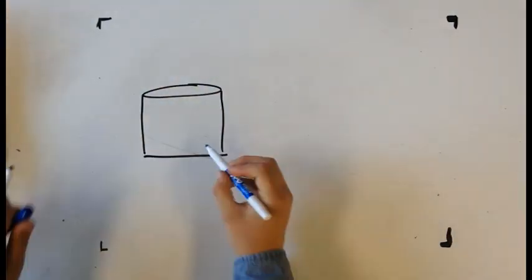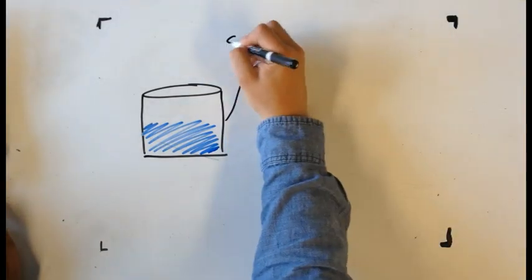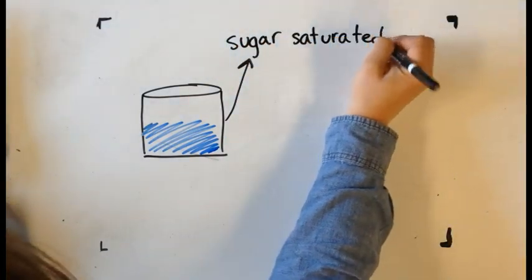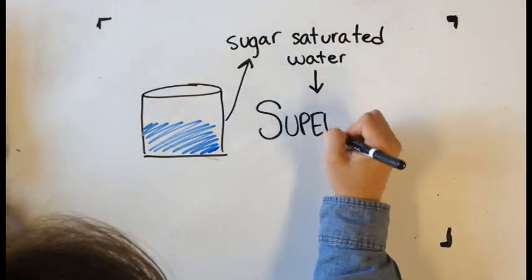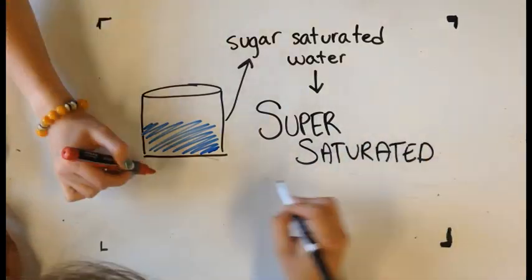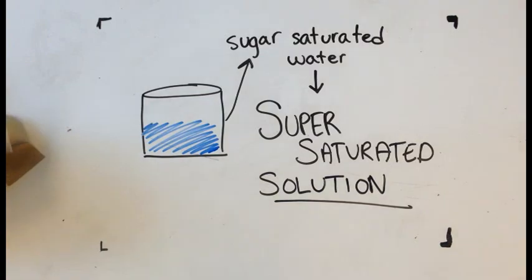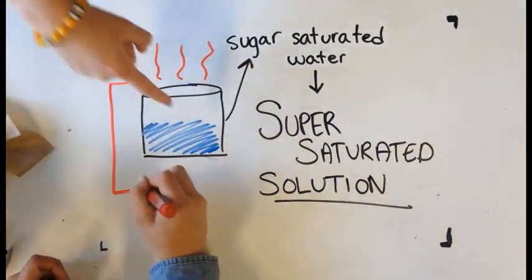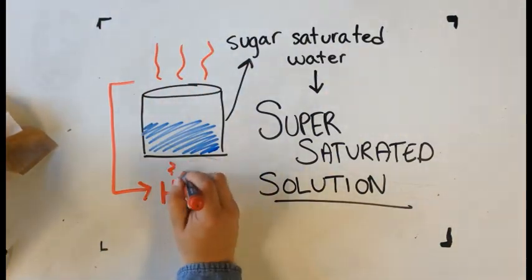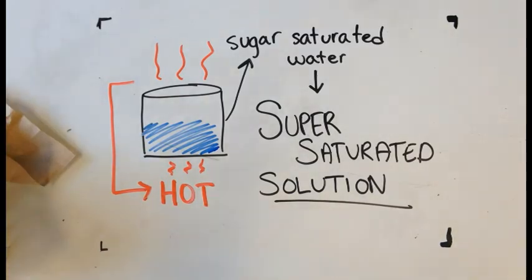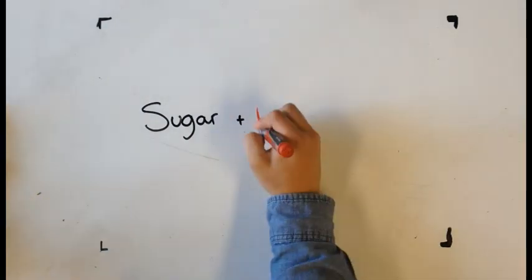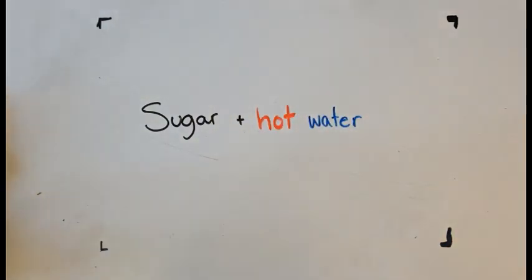In order to successfully make rock candy, you need to start with a good foundation. This foundation is sugar saturated water. The sugar saturated water is also called a super saturated solution. A super saturated solution can be made by applying a substance such as sugar to hot water until no more sugar can be dissolved. A lot of sugar combined with hot water will give you a super saturated solution.